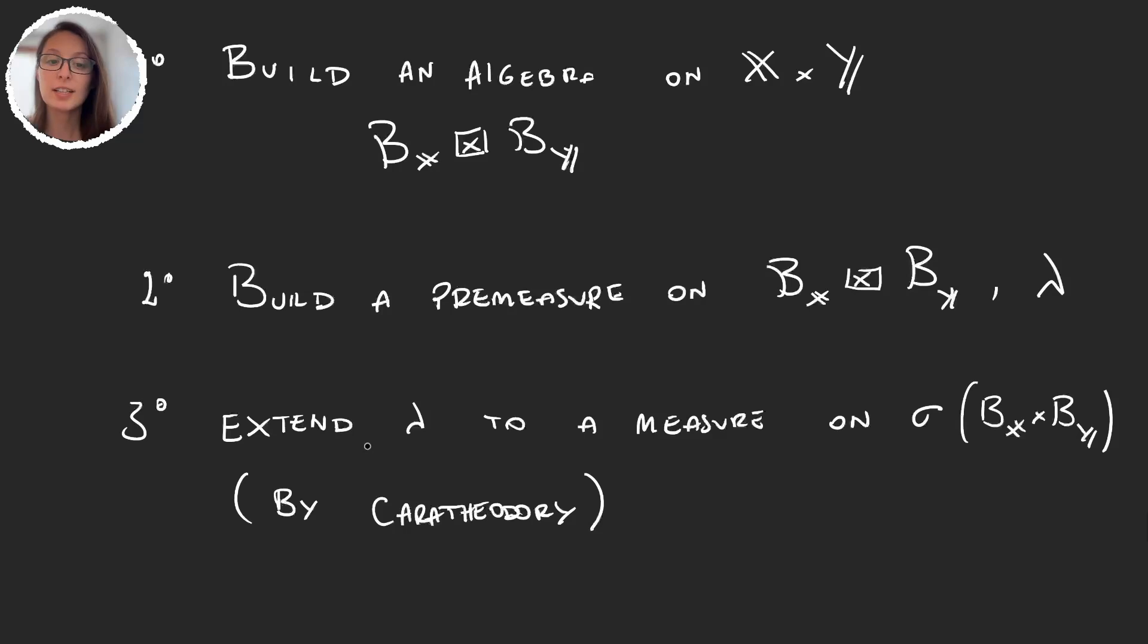And now this extension of the premeasure, we're going to call it mu times nu. And this is just notation, but this is only one measure. It's called the product measure on X times Y. It's defined on this sigma algebra generated by the algebra. And the name that we're going to give to this sigma algebra, product sigma algebra, is B_X times B_Y. And this symbol times is going to be with a circle. That's the usual notation for the product sigma algebra.